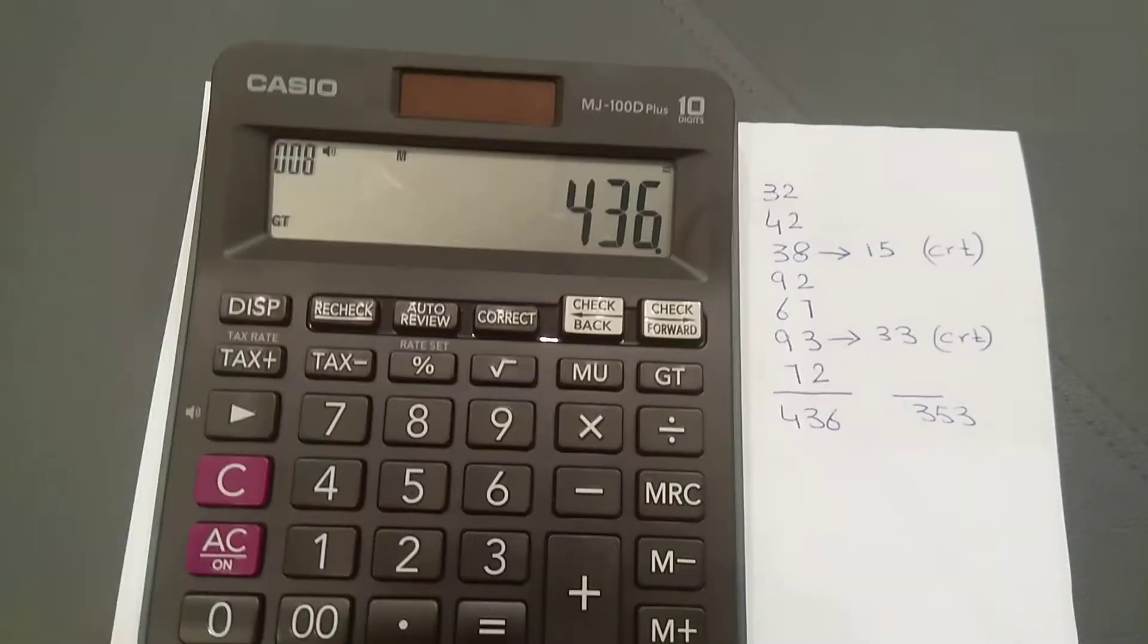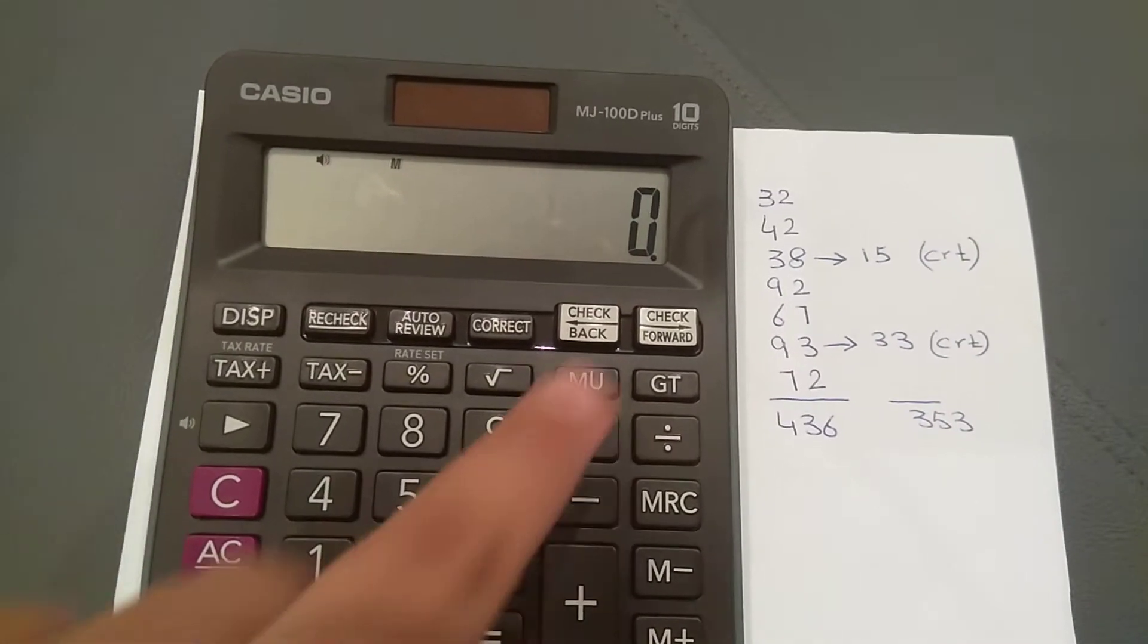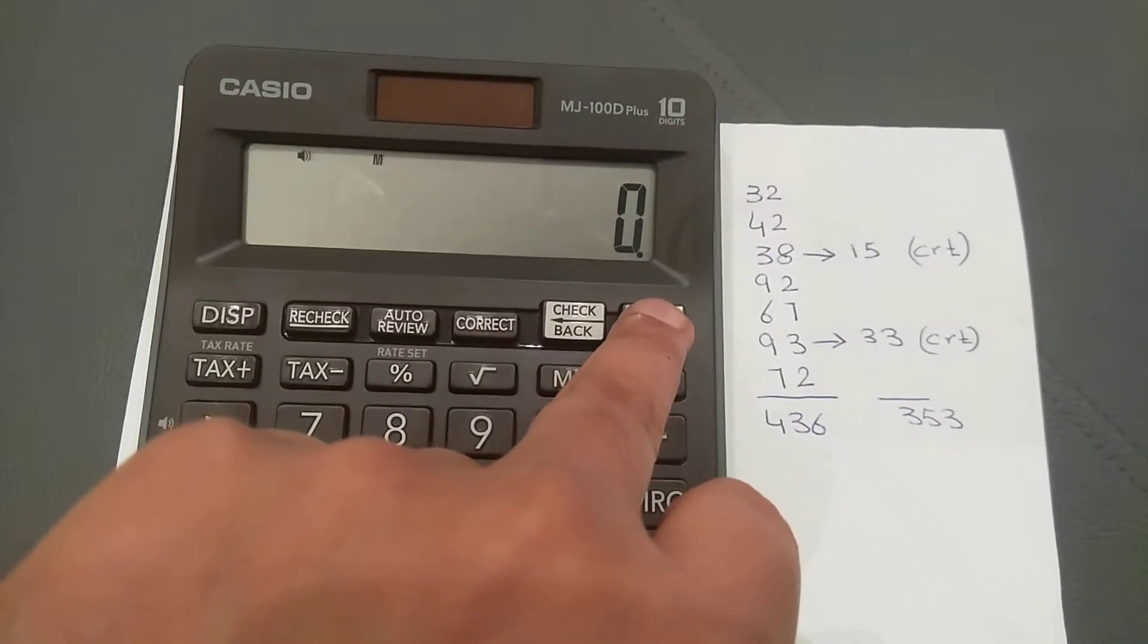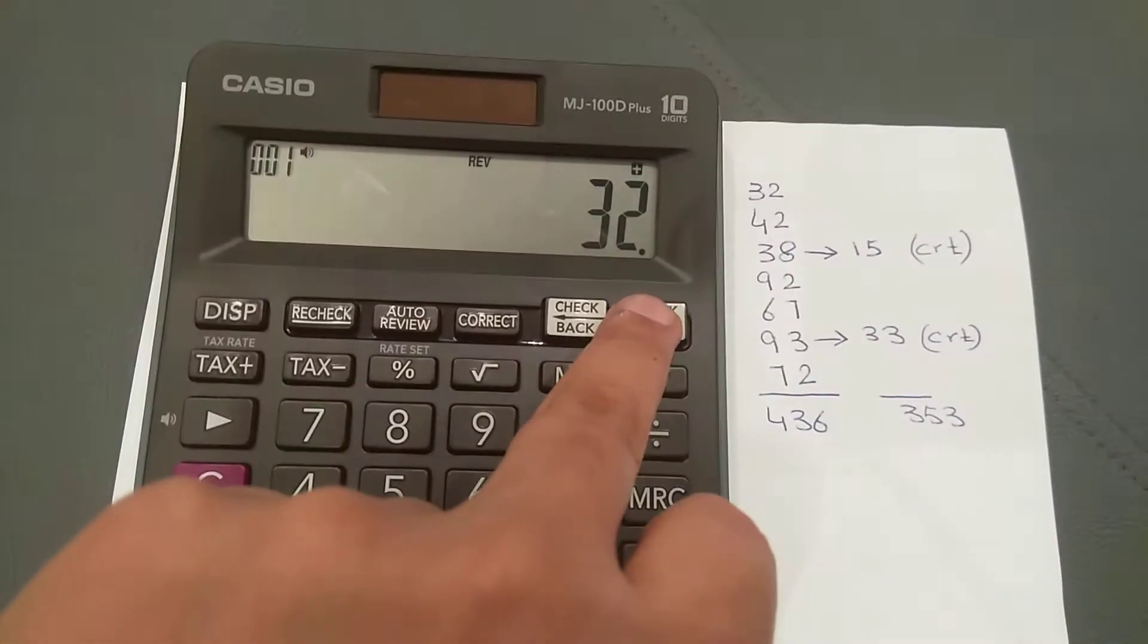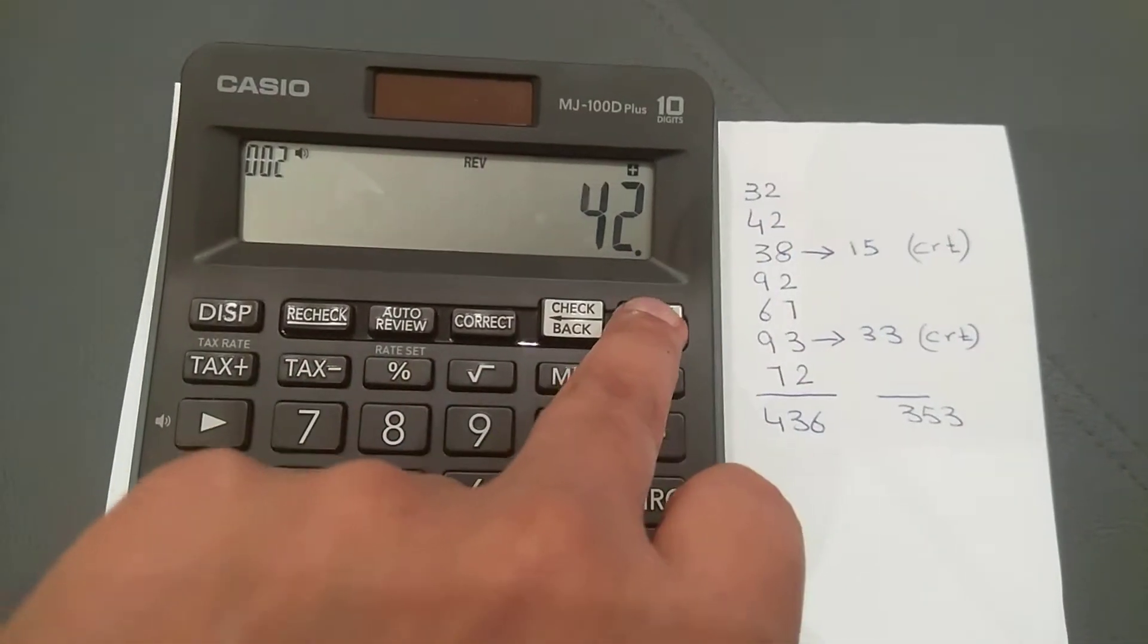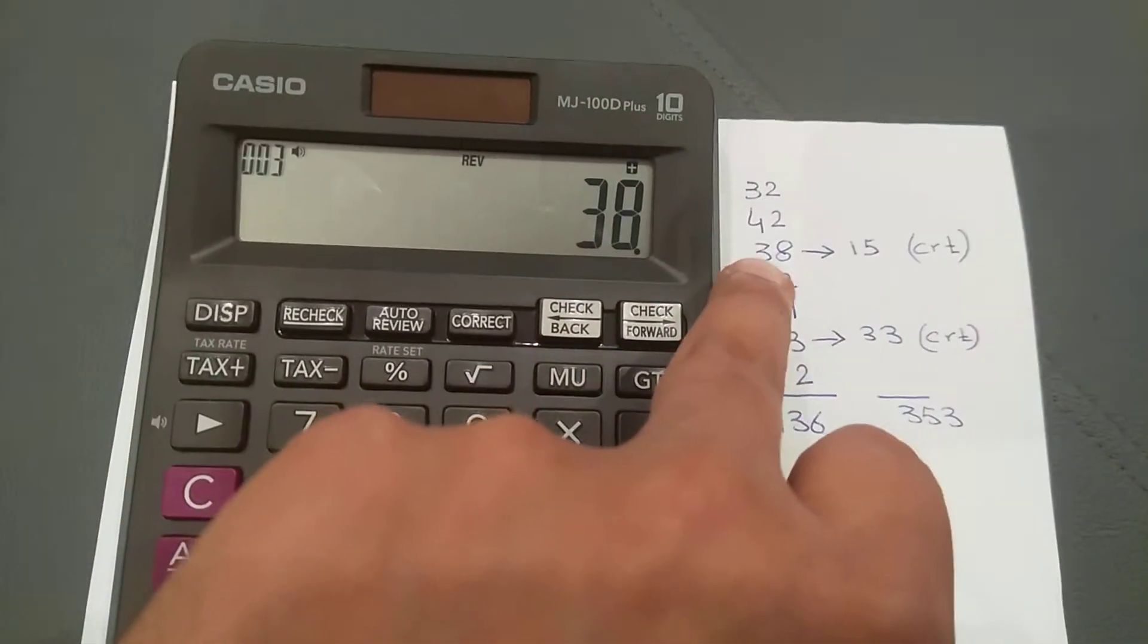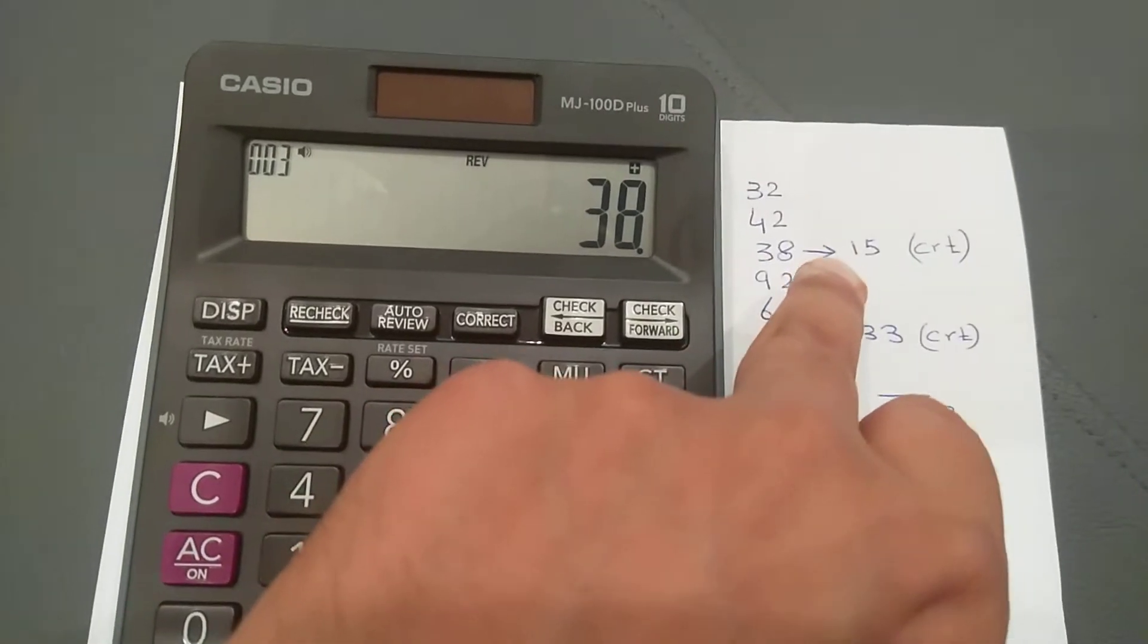Using the check forward button, it shows the first number which is 32, second number 42, and third number 38. I want to change this 38 to 15.